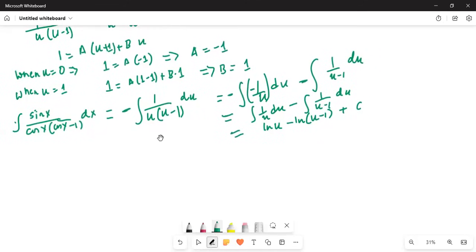So this becomes equal to ln of u divided by u minus 1. All of this should be under absolute values. So ln of absolute value of u divided by u minus 1 plus c.